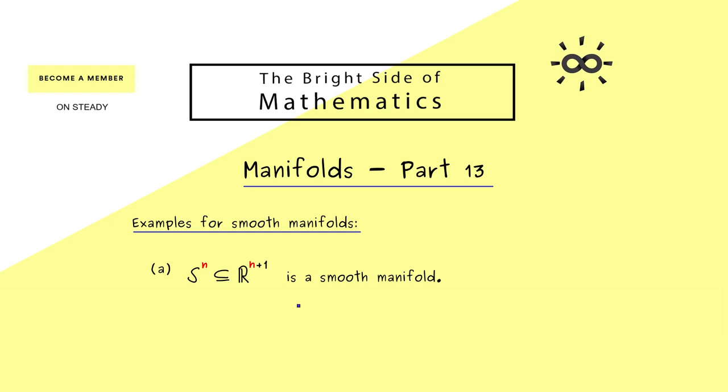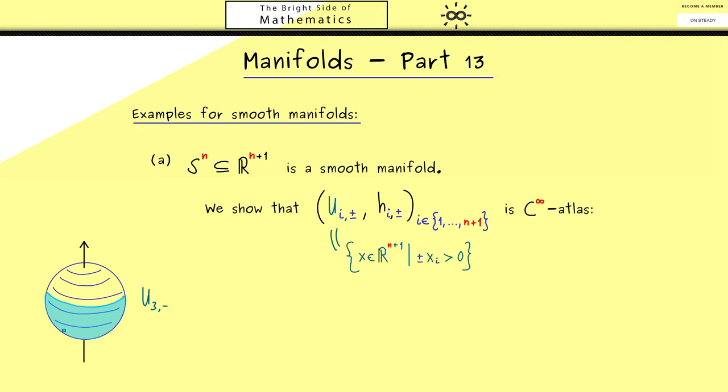Therefore the first step here should be that we show that this atlas is indeed a C∞-atlas. For this please recall that we had charts given by the sets u_i^± and the maps h_i^±. In fact this was not so complicated, it was just about taking hemispheres and then the projections.